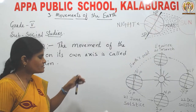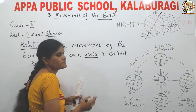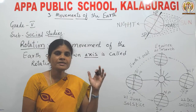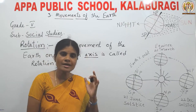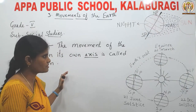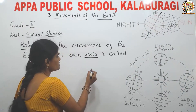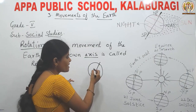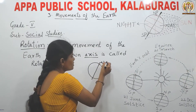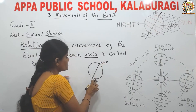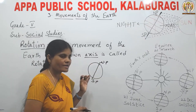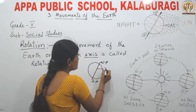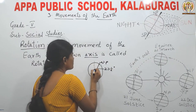What is axis? Axis is nothing but an imaginary line which connects the north pole and south pole and passes through the center of the earth. This is the definition of axis. The axis is inclined at an angle of 23 and a half degrees. Inclined means slant.